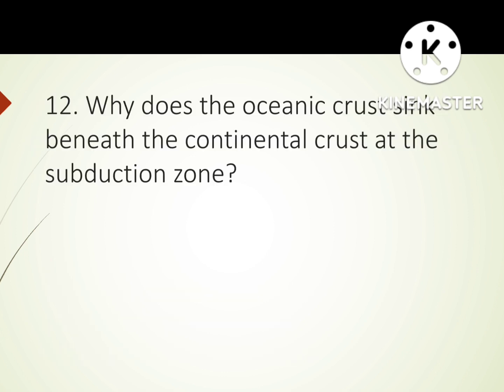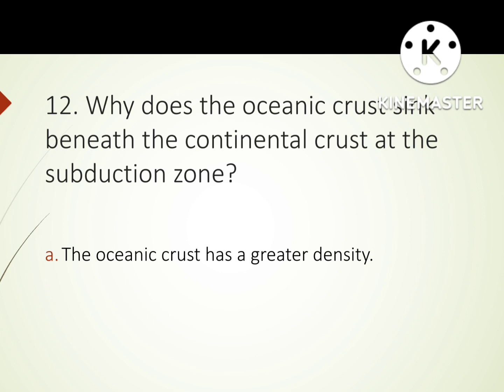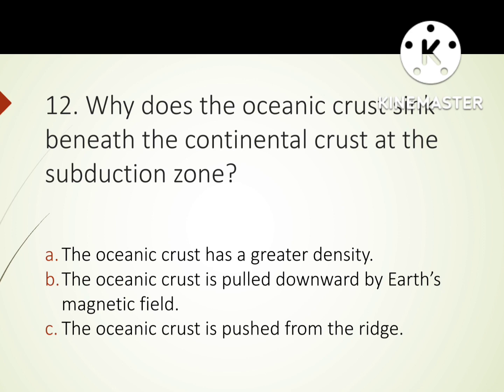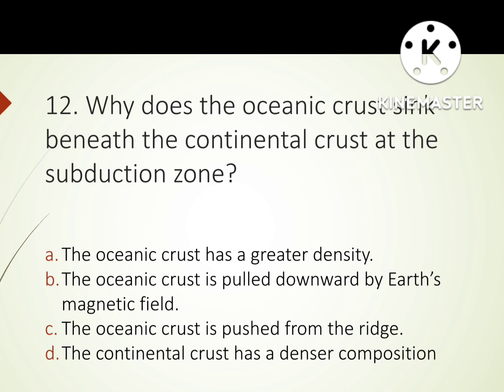Number 12 question: Why does the oceanic crust sink beneath the continental crust at the subduction zone? A. The oceanic crust has a greater density. B. The oceanic crust is pulled downward by Earth's magnetic field. C. The oceanic crust is pushed from the ridge. D. The continental crust has a denser composition. The correct answer is A: The oceanic crust has a greater density.